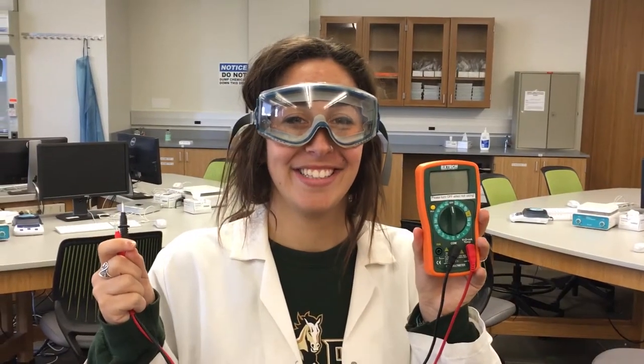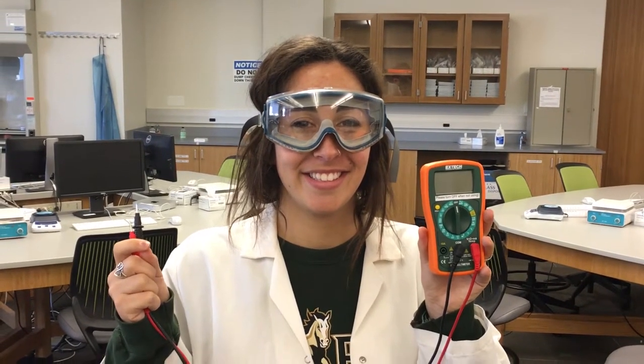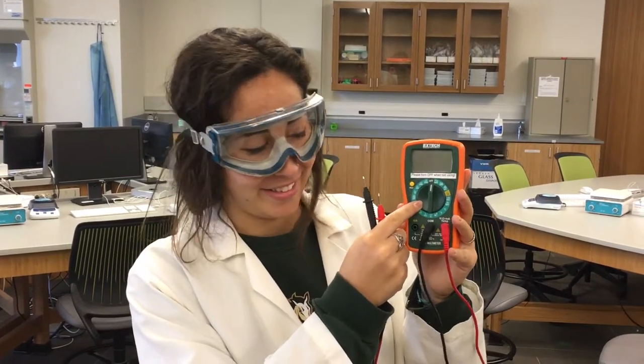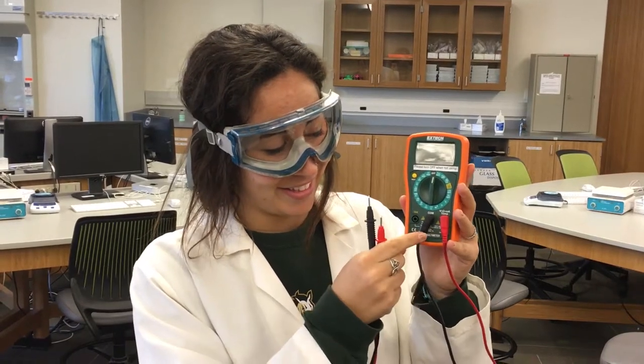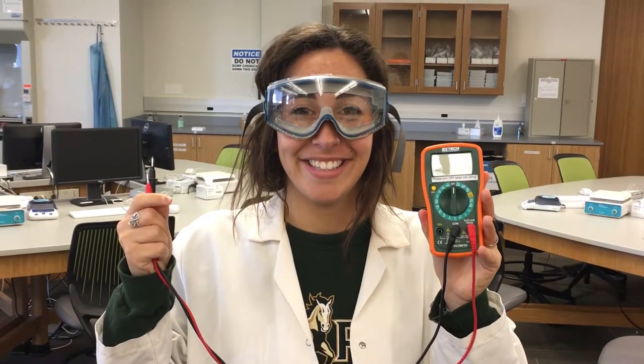To start off, the voltmeter consists of three major components: a dial, a positive terminal, and a negative terminal. Easy enough to remember, right?